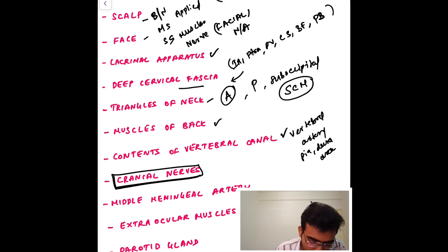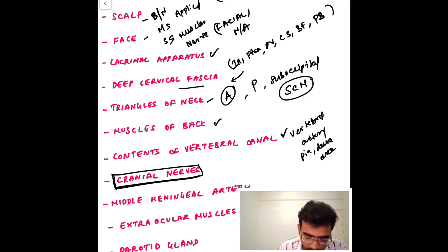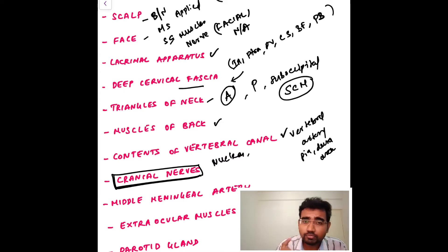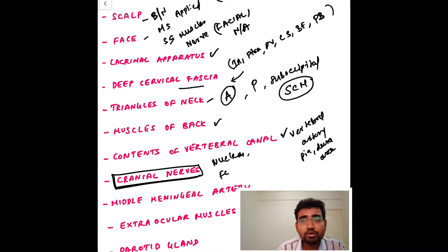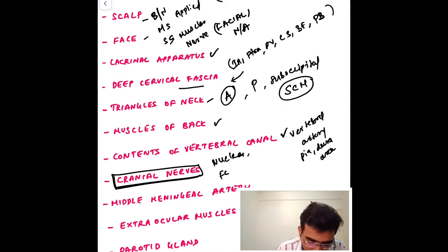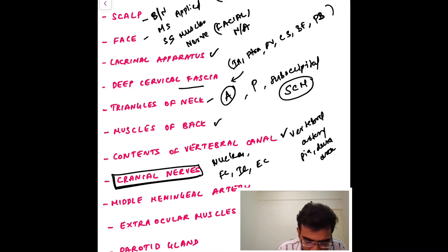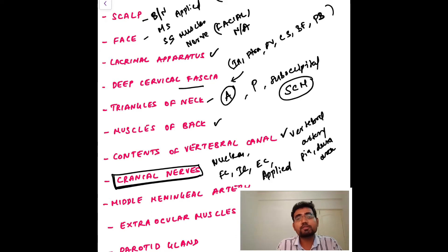For each cranial nerve you should learn the nucleus, the functional component — whether general visceral afferent or general somatic afferent — the intracranial aspect, the extracranial aspect, and the applied anatomy: what happens if a particular nerve is damaged or how to preserve it during a particular surgery.